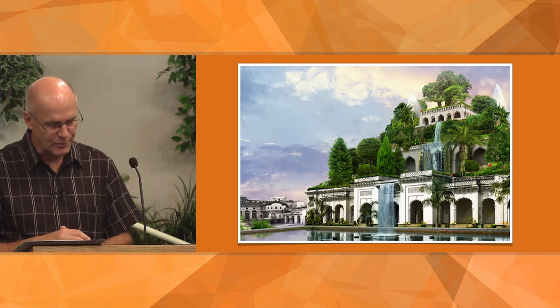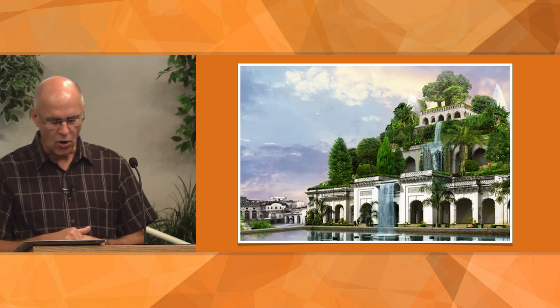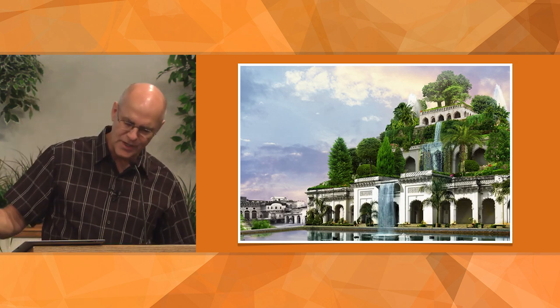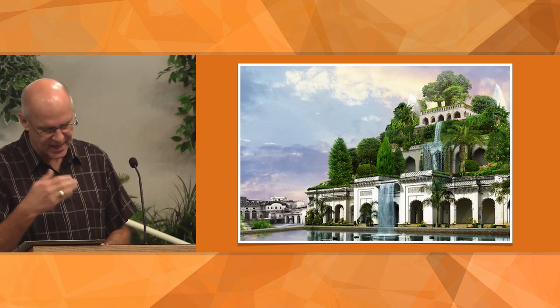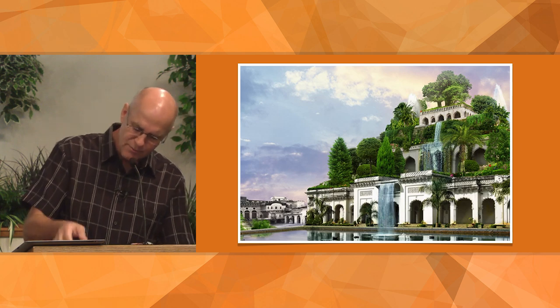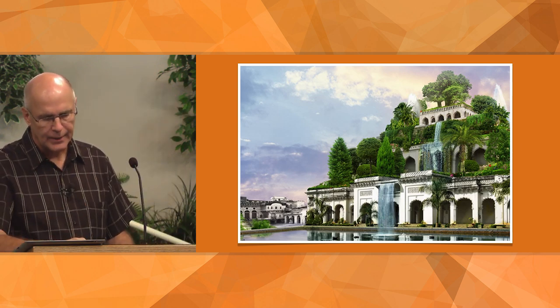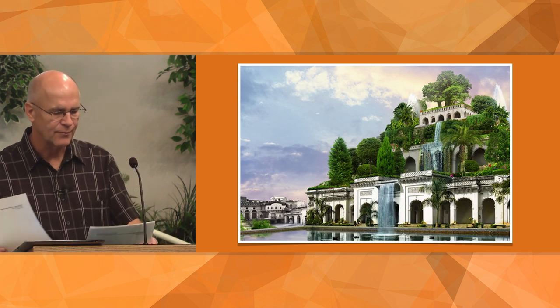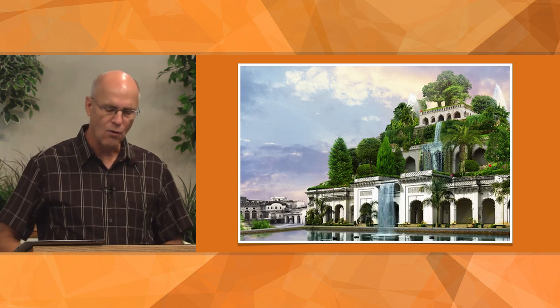He built the Hanging Gardens for his queen. The gardens were platforms of 400 square feet held up by arches that cascaded down one from another, filled with flowers, trees, and shrubs, all watered from a reservoir at the top fed by hydraulic pumps from the Euphrates River below. We sometimes think ancient cultures had no engineering, but they had amazing engineering.